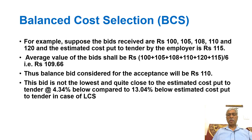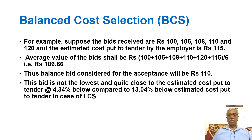For example, suppose bids received are rupees 100, 105, 110, and 120, and the estimated cost put to tender by the employer is 115. The average bid value works out to 109.66, so the balanced bid considered for acceptance would be 110. This bid of 110 is neither the lowest nor the highest, and is quite close to the estimated cost — only 4.34 percent below, compared to 13.04 percent below in the case of LCS.